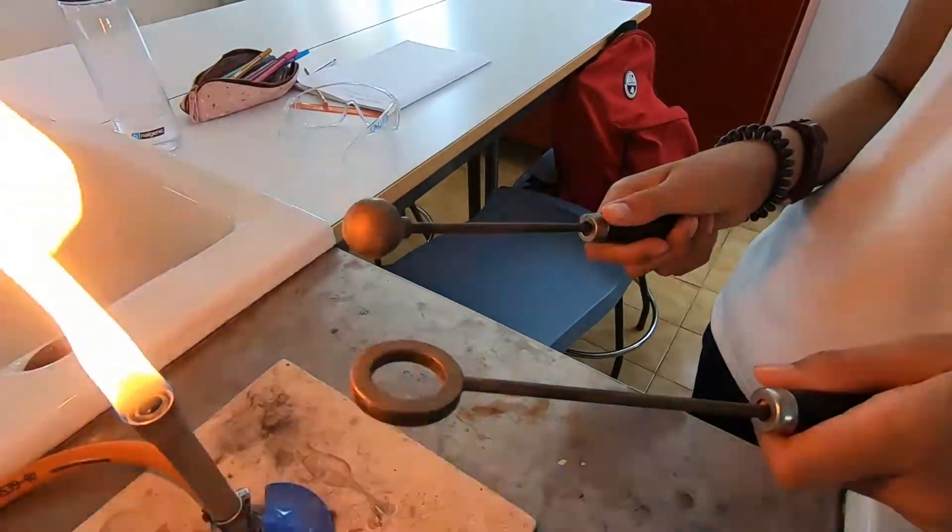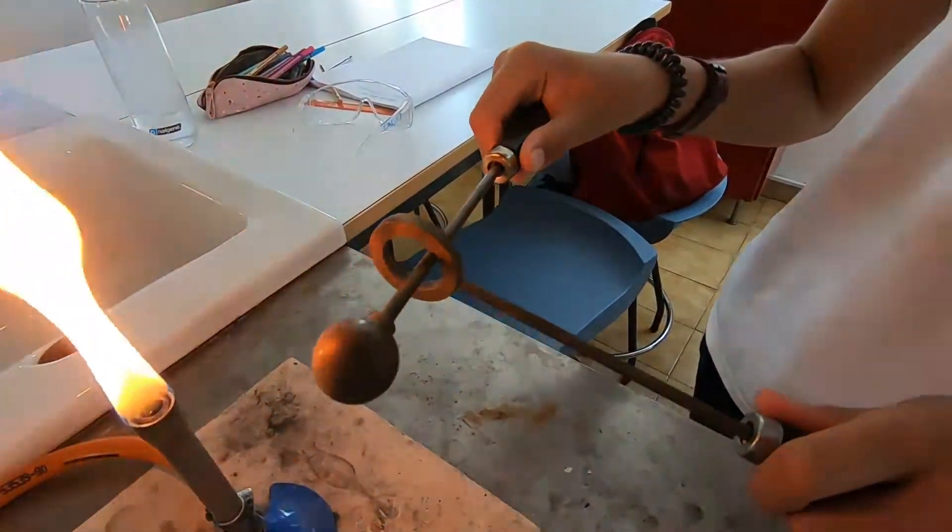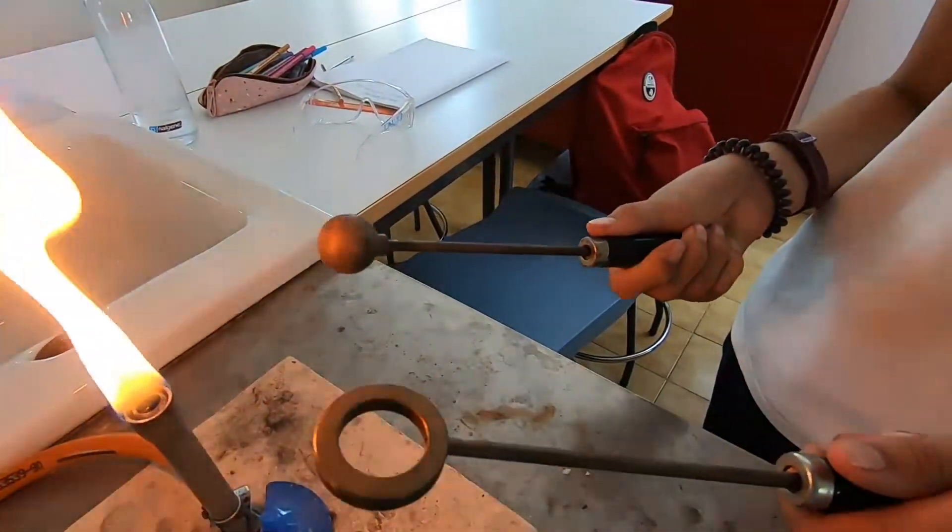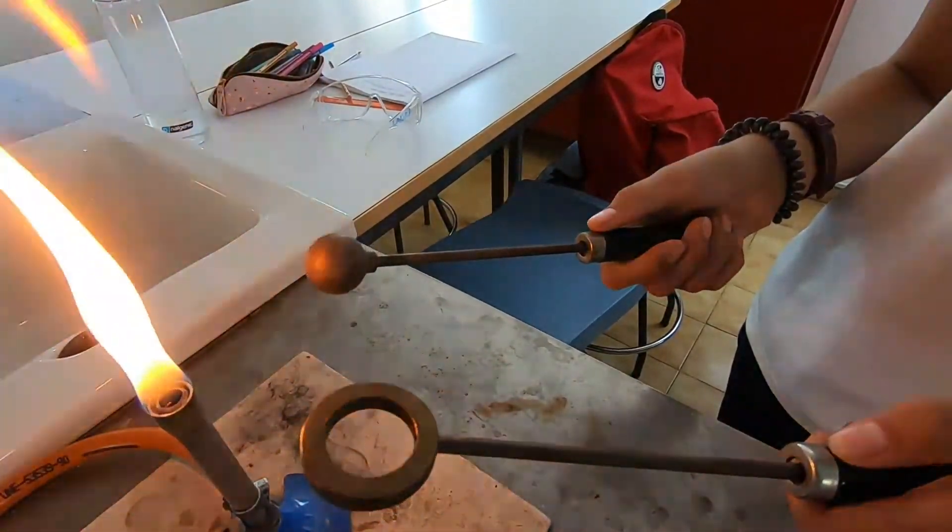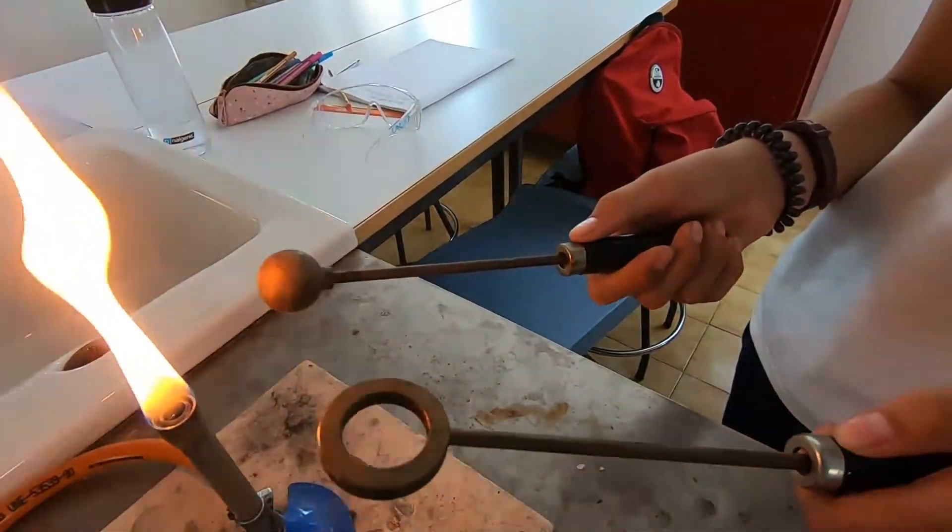The ball goes through the hole, so the ball will pass through. What you're going to do now is put that into the Bunsen burner flame. You're going to get just the ball hot.